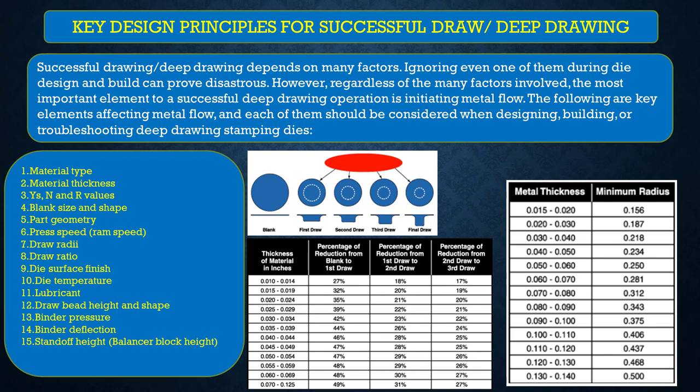A table is provided with respect to material thickness showing what the minimum radius should be — refer to the table in the presentation. Number eight: draw ratio — the thumb rule is first draw 50%, second draw 30%, and third draw 20%; however it can vary, and a detailed tabular column is given for each thickness showing allowable draw percentages. Numbers nine through fifteen: die surface, die temperature, lubricant, draw bead height and shape, binder pressure, binder deflection, and standoff height (balancer block height).